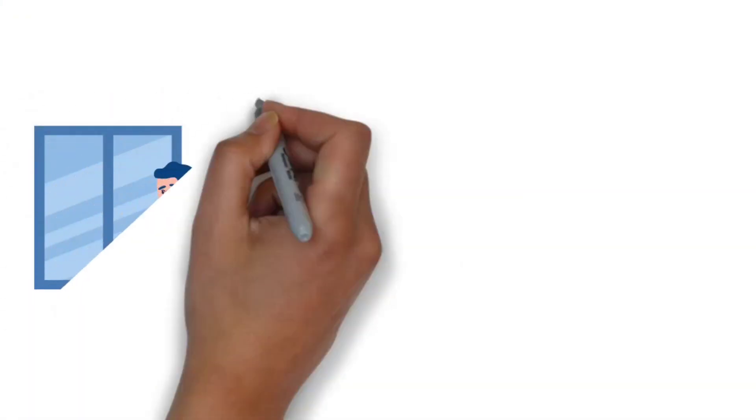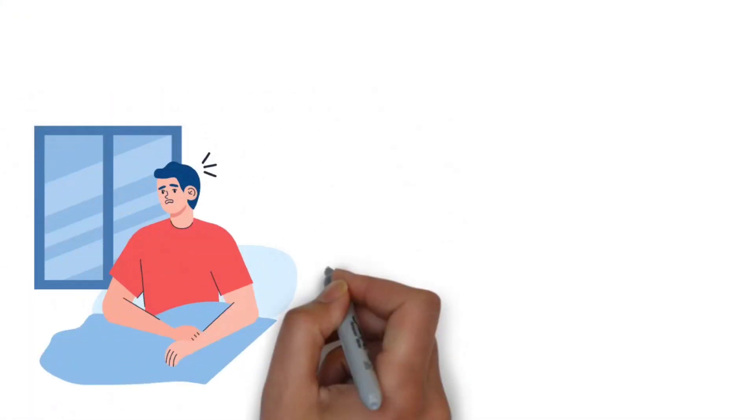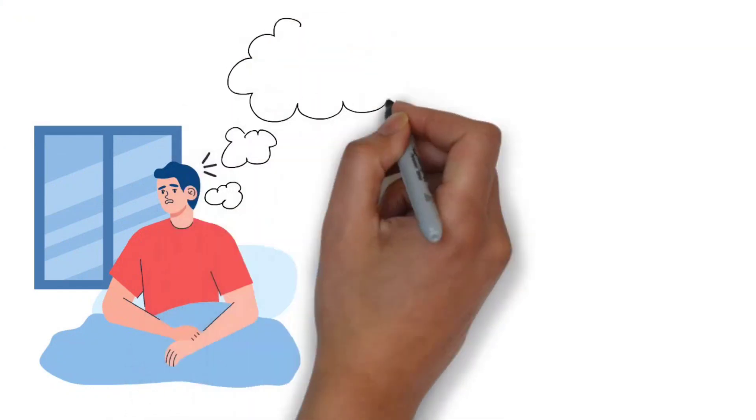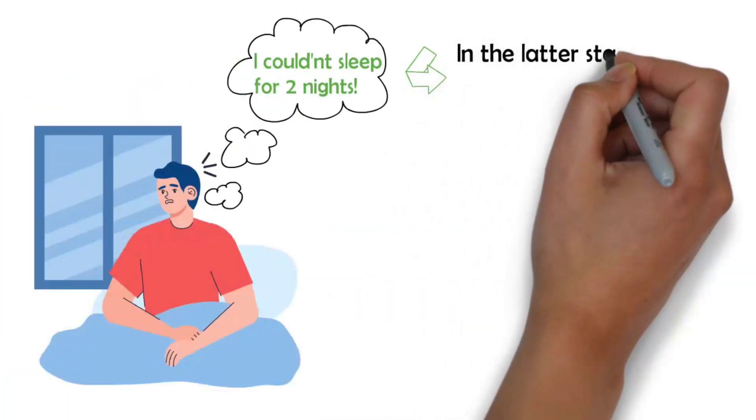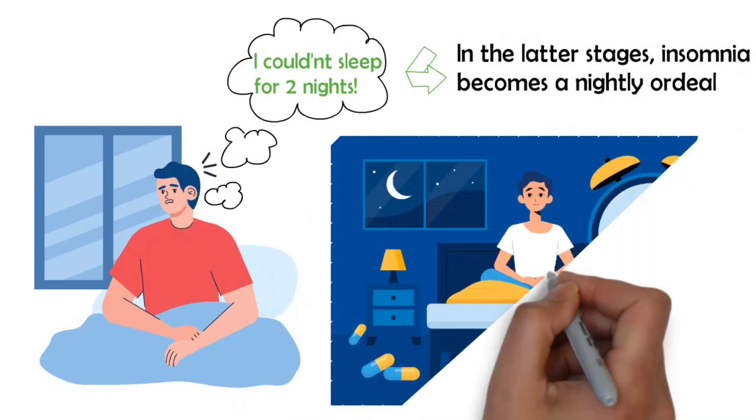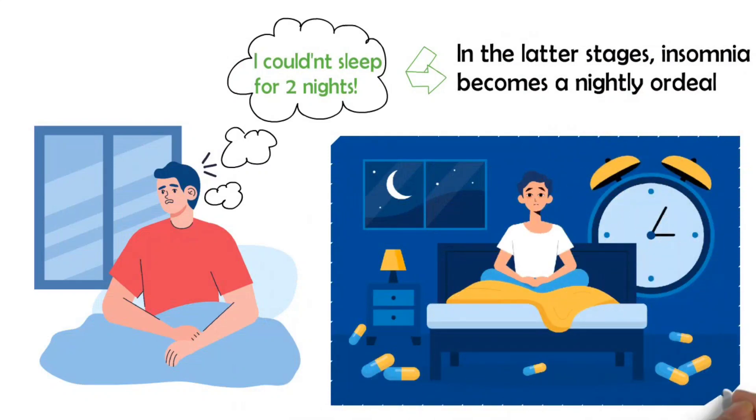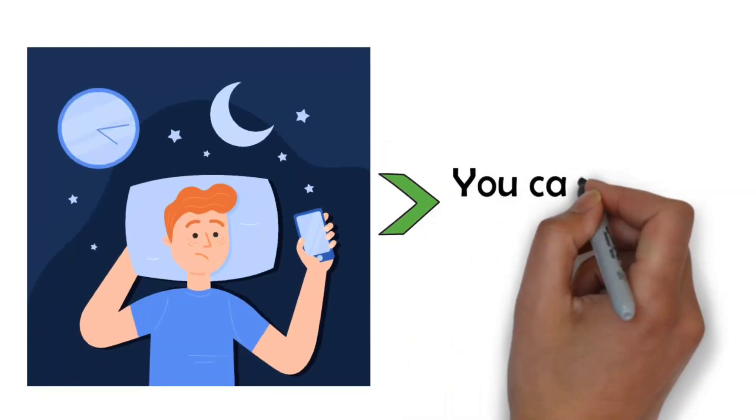In the early stages, you may have trouble falling asleep or staying asleep one or two nights a week. In the latter stages, insomnia may turn into a persistent nightly ordeal. As exhausted as you are, you cannot sleep.